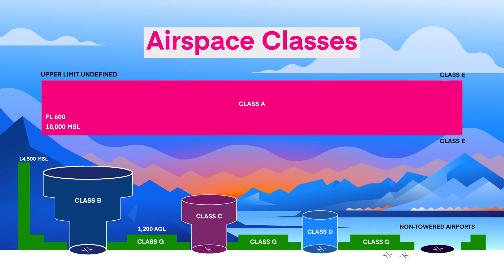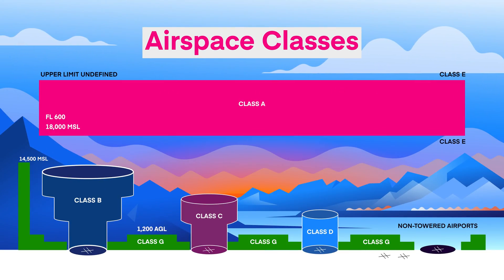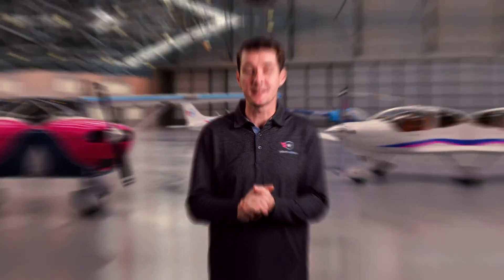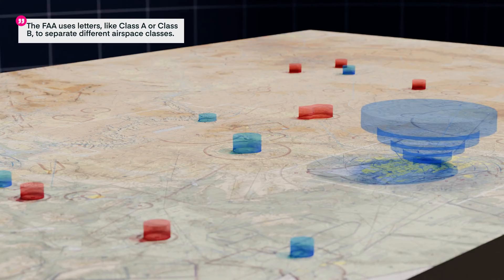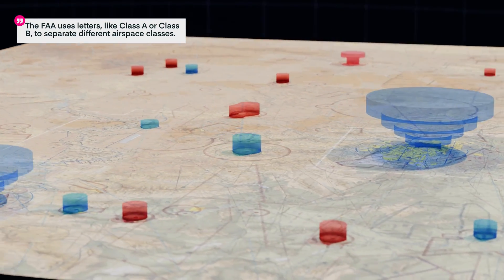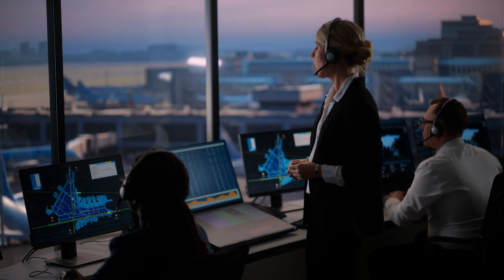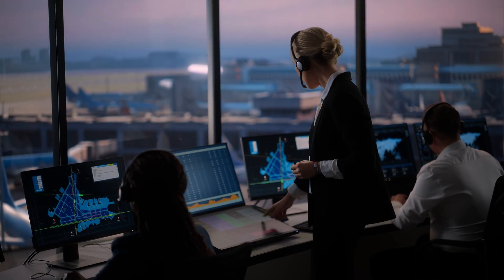In this video, we will cover everything you need to know about airspace classes. We promise it's not as hard as you think. But what is an airspace class? It's just a type of airspace. The FAA uses letters like Class A or Class B to separate them. Airspace can either be controlled or uncontrolled. Controlled airspace is where ATC controls traffic, while uncontrolled airspace is where they don't.